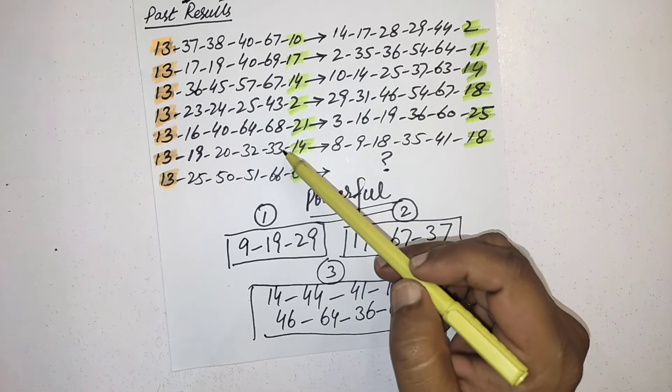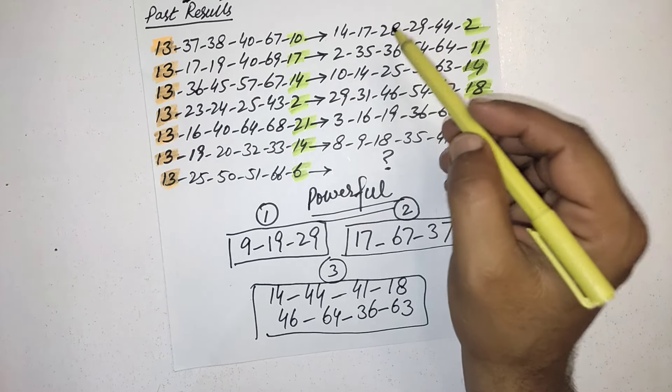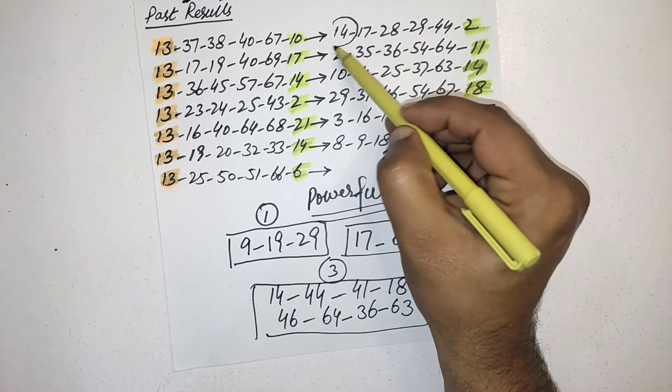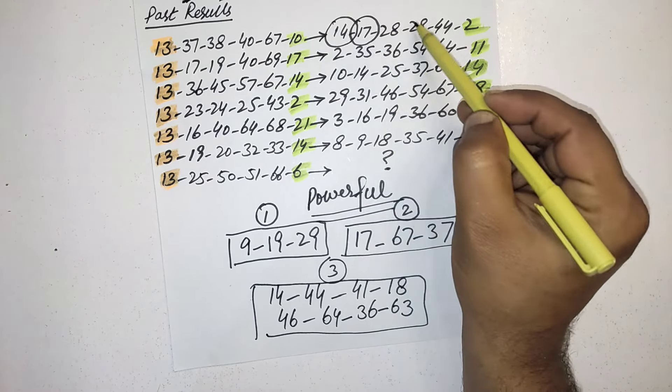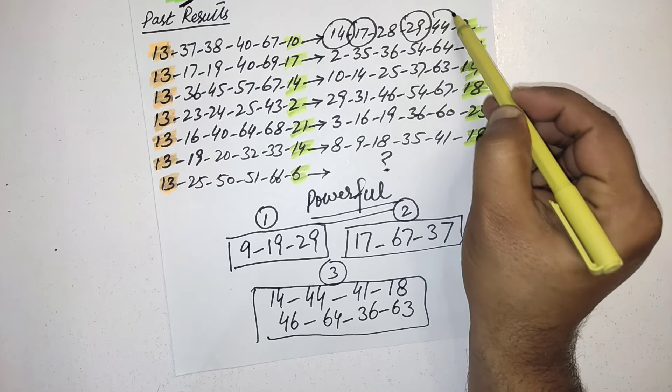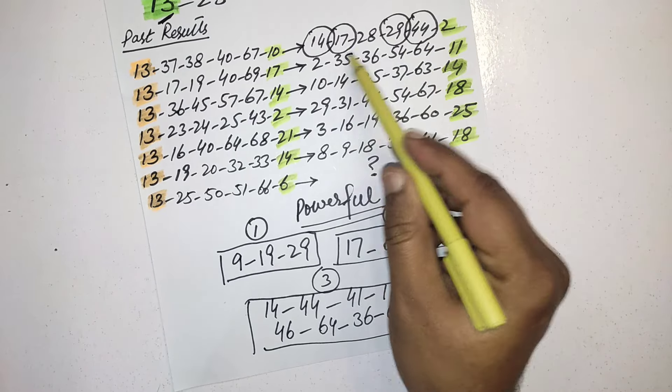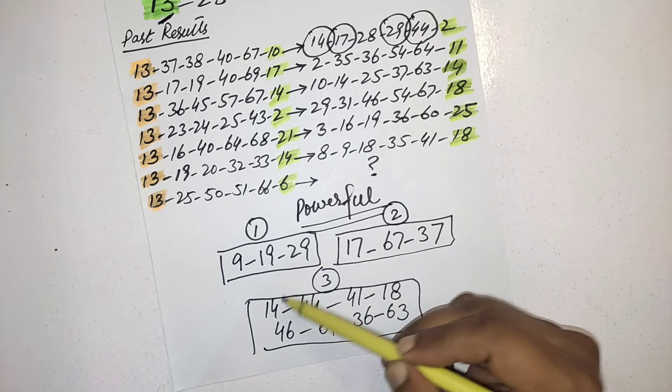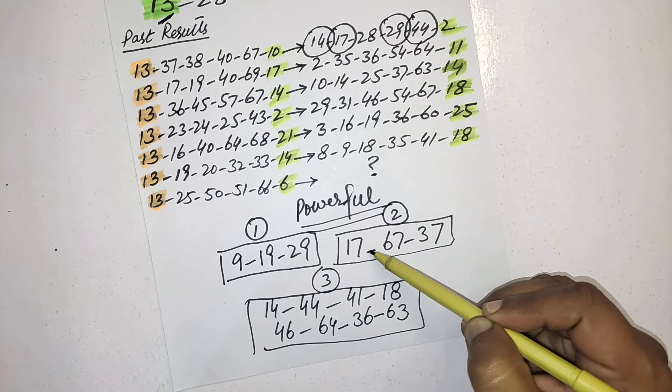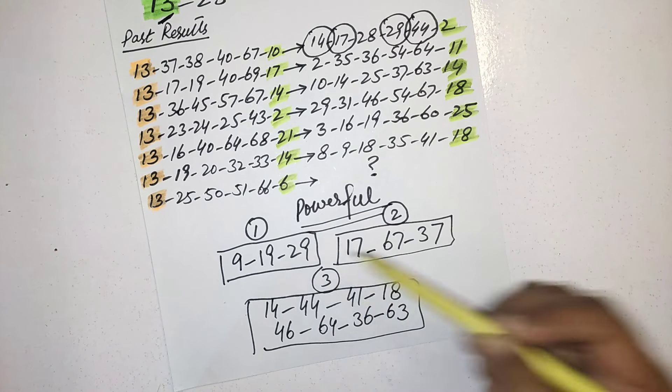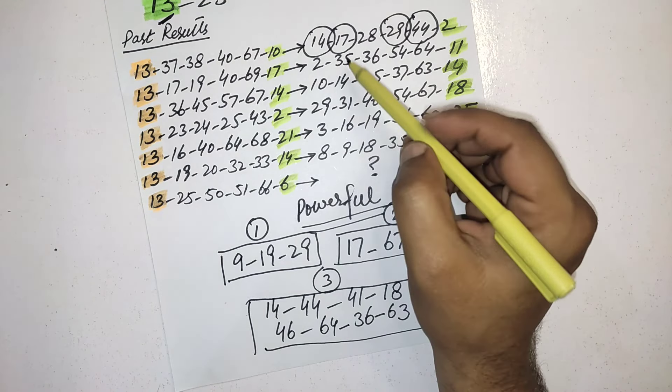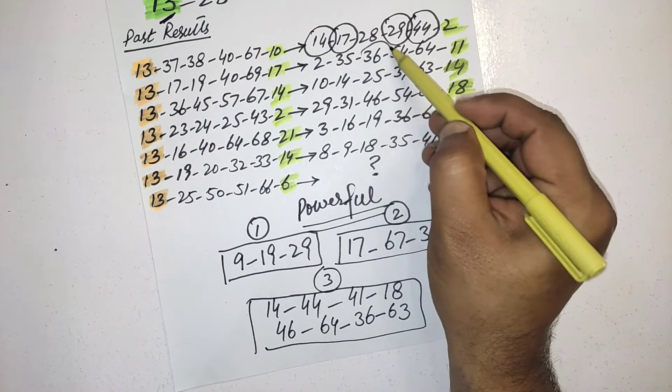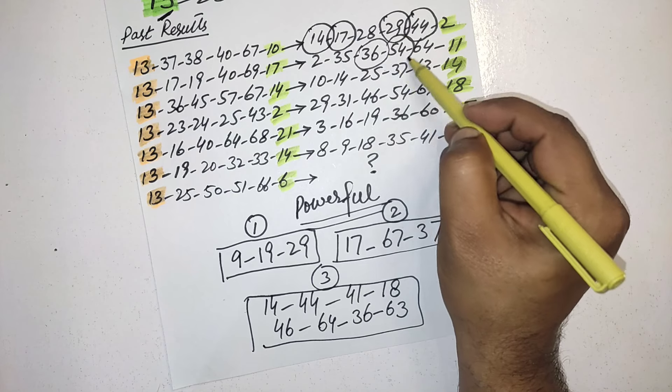You can see first time they picked 14, 17, 29, 44. Total four numbers they picked between these numbers: 14, 17, 29, and 44. Second time you can see 36, 54, and 64.